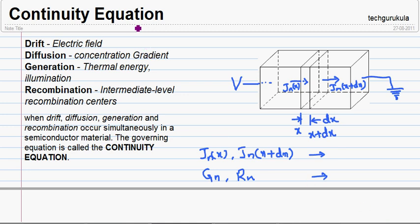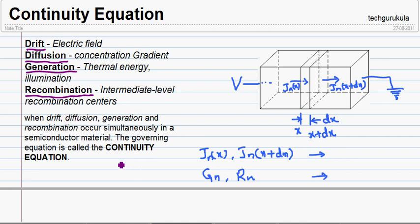In this video, we are going to see what a continuity equation is and how it is derived. In the previous videos, we have individually considered effects such as drift due to electric field, diffusion due to concentration gradient, generation of carriers due to thermal energy and illumination of light, and recombination of carriers through intermediate level recombination centers. When all these effects are considered simultaneously in a semiconductor material, the governing equation is called the continuity equation.